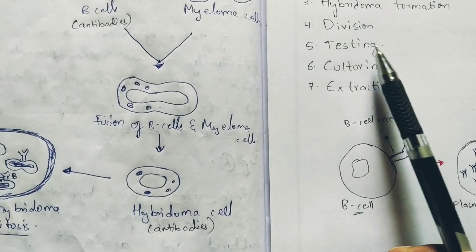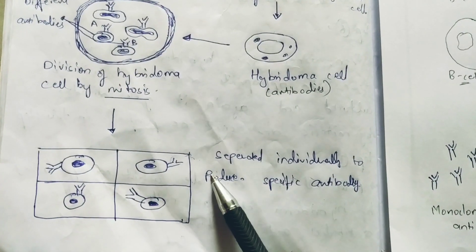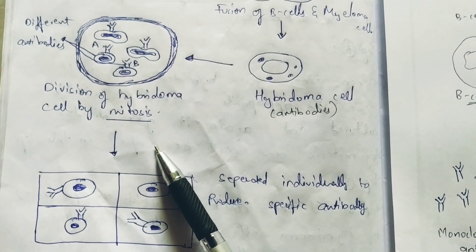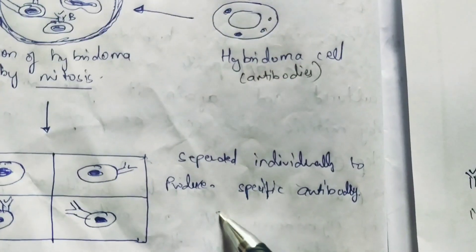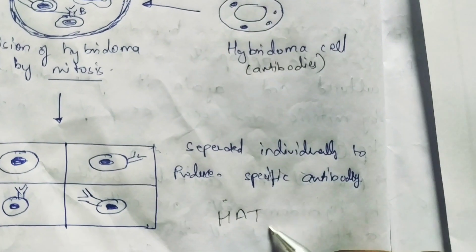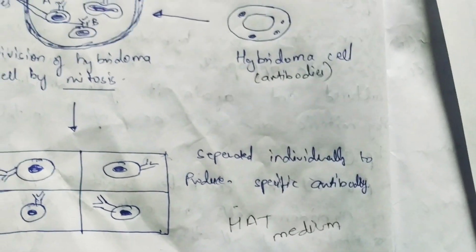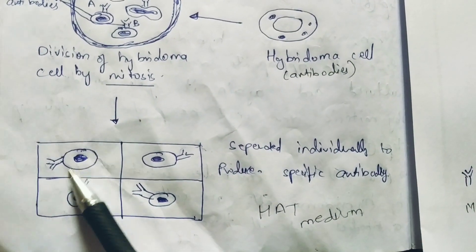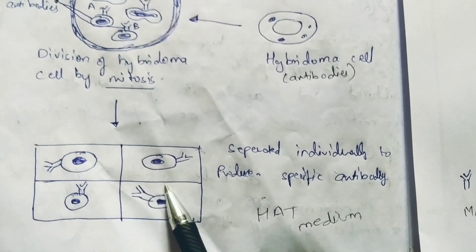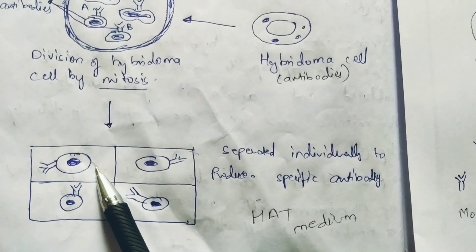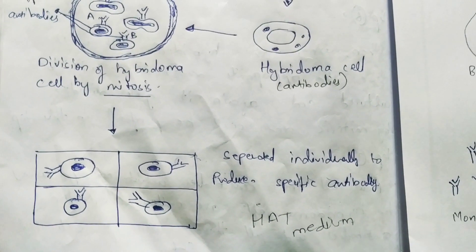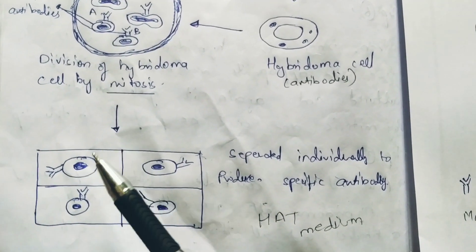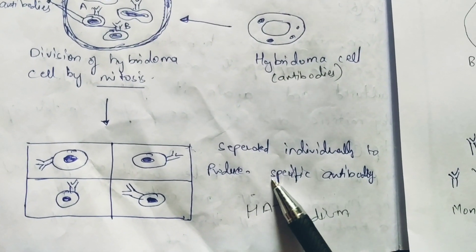Fifth step — testing. Testing takes place by the separation process. All of the daughter individuals will get separated and will be tested under HAT medium. In the presence of the HAT medium, all the daughter individuals formed from this hybridoma cell will be placed — each individual placed in each well. There are totally many wells; only one individual will be present in one well. It will be separated individually to produce a specific antibody.